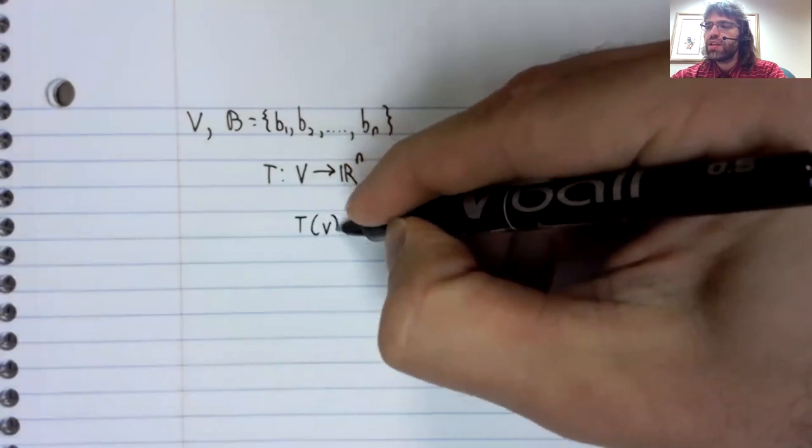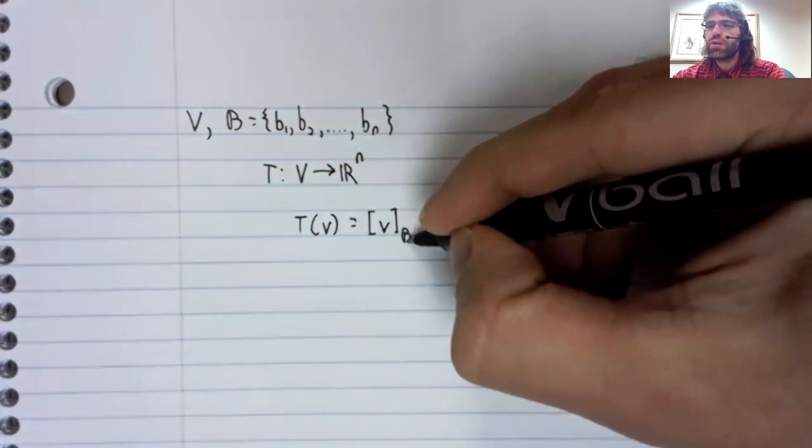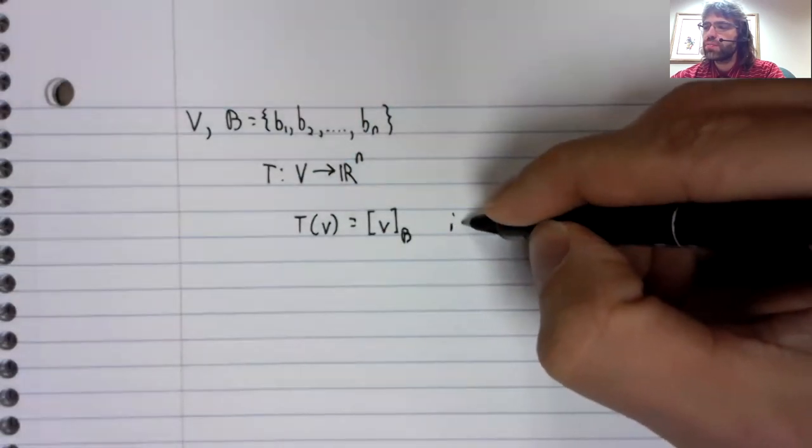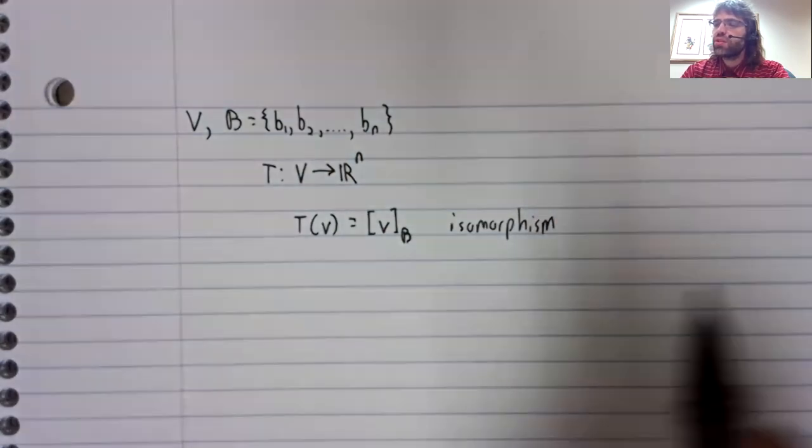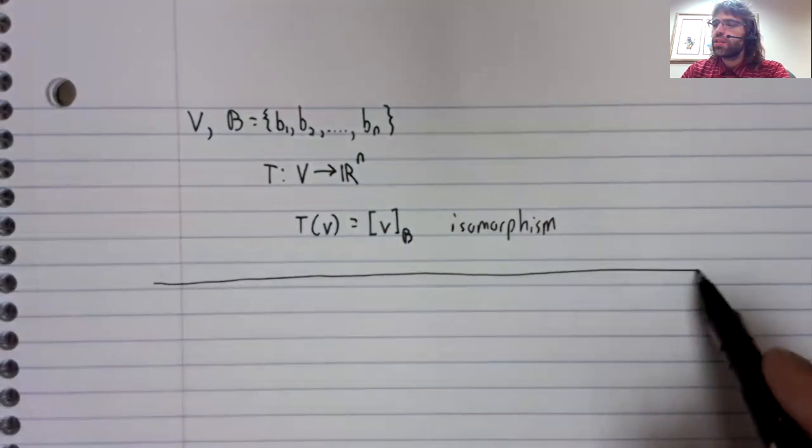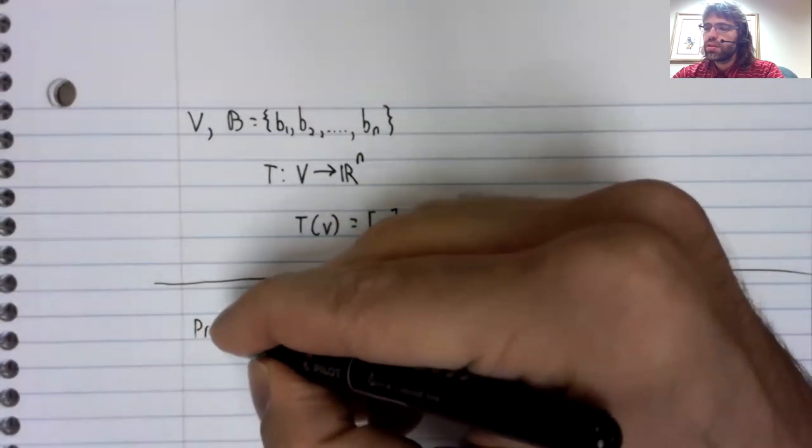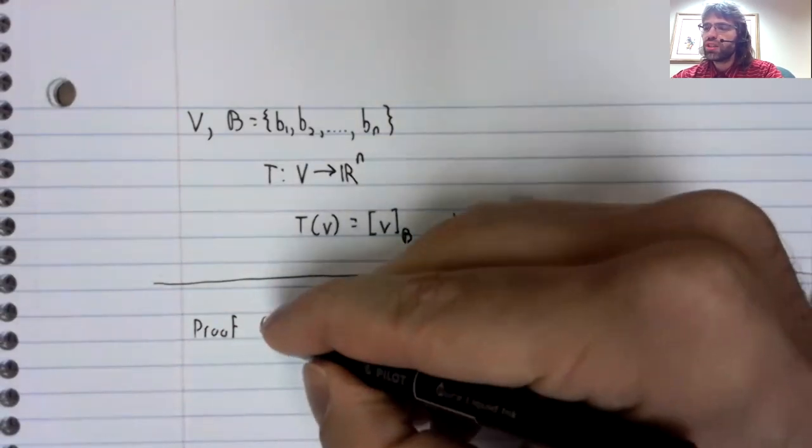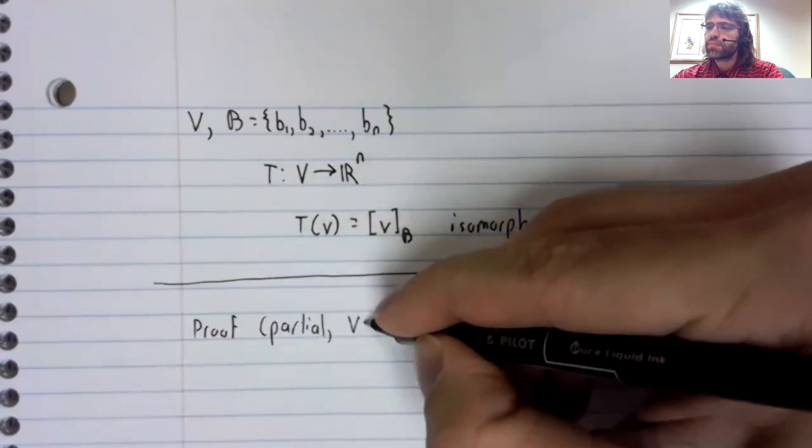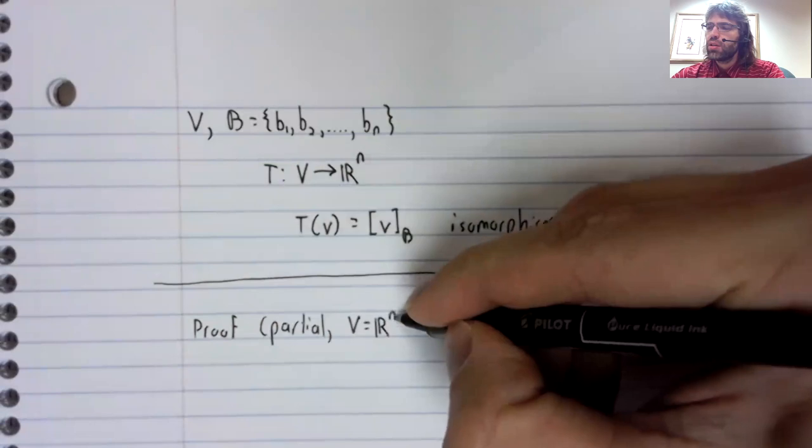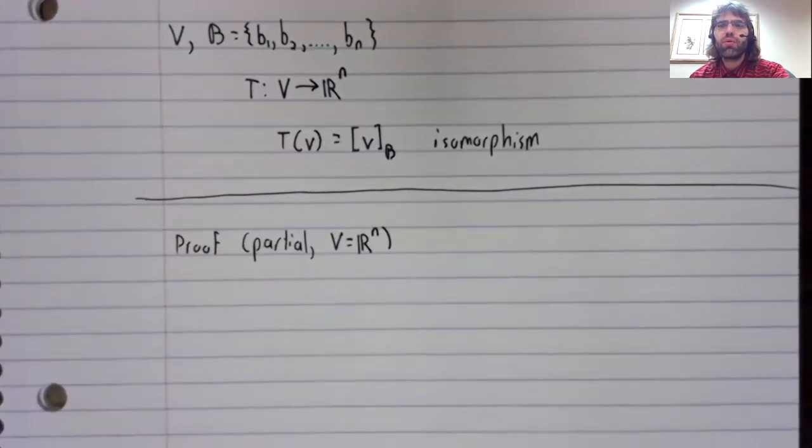T of V equals the coordinate vector of V, and this is an isomorphism. I'm not going to prove this in generality, but let's prove this in the special case where V is itself R^n.